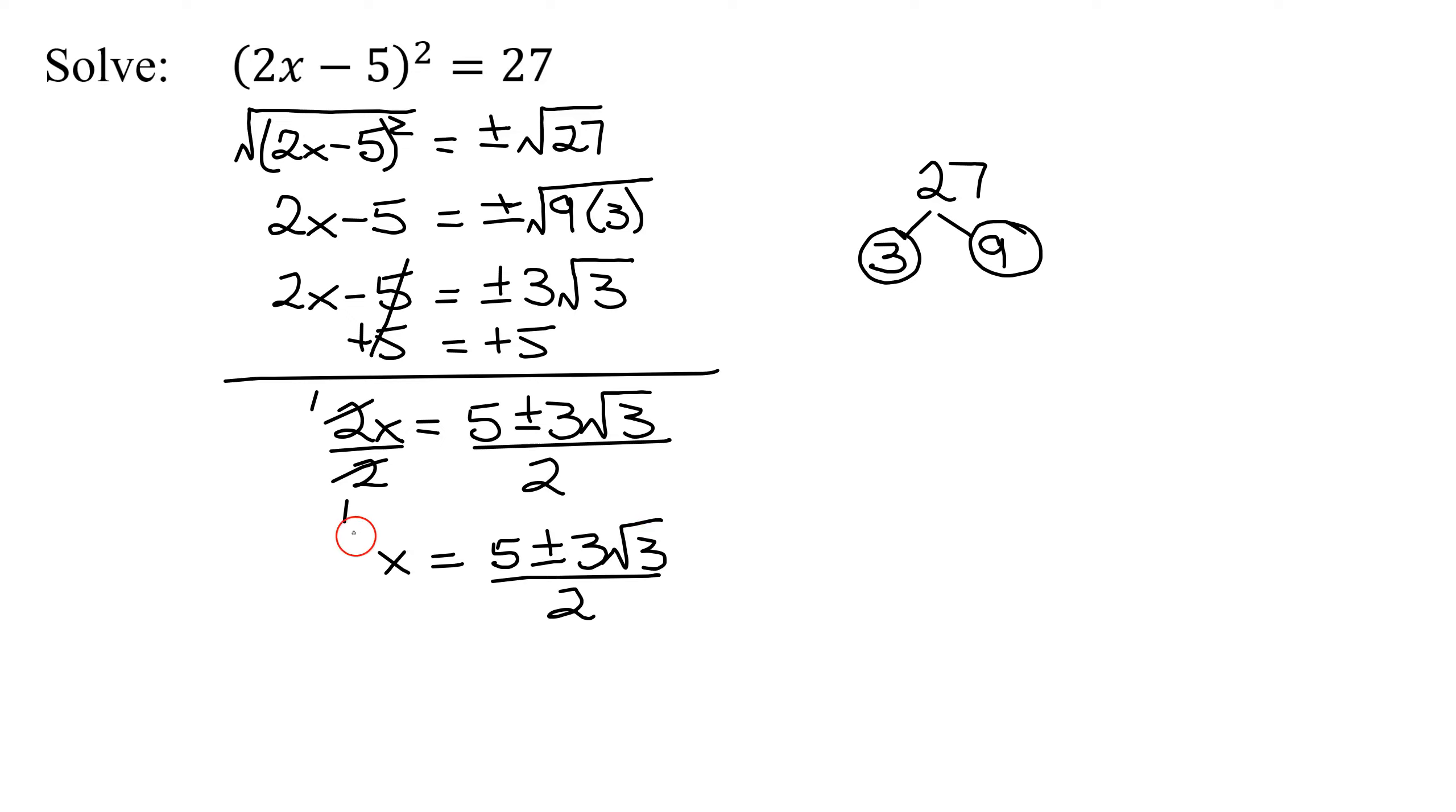Nothing simplifies further, so that is one way to write the two solutions. Sometimes you're asked to write the solutions individually: x = (5 + 3√3)/2 and x = (5 - 3√3)/2. But a more concise form is x = (5 ± 3√3)/2.